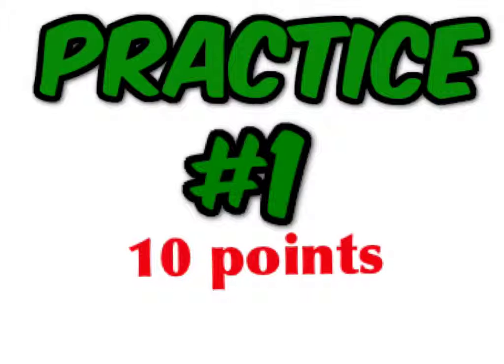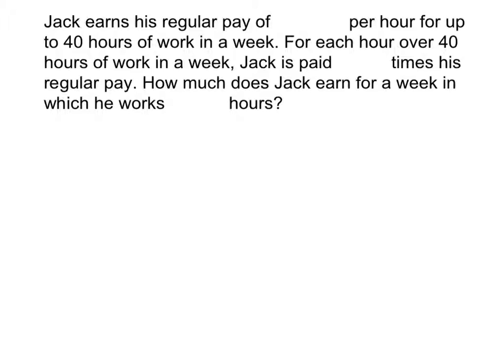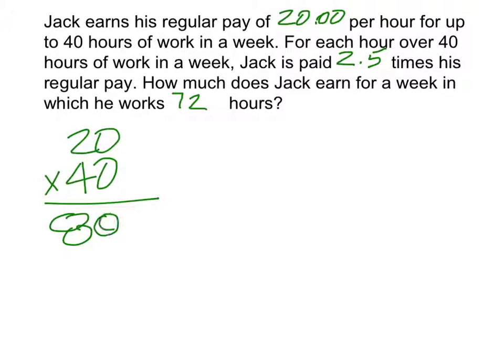This one is for 10 points. Jack earns his regular pay of $20 per hour. And for each hour over 40 that he works, he's going to be paid 2.5 times his regular pay, and the week for this week what he's working is 72 hours. Find out how much money he made. On the practice problem, the first thing you have to do is to multiply $20 per hour times 40 to get his regular weekly pay, which in this case is going to be 800.